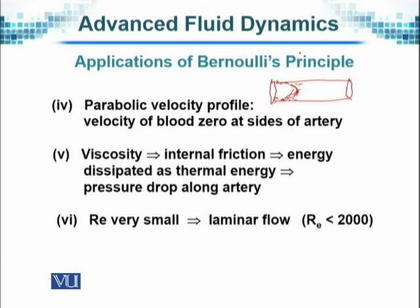When there is viscosity, then there is internal friction. Viscosity actually happens because of internal friction, and that implies energy. When energy is dissipated, then heat is generated because of the friction. We can see that just by rubbing the hand and we will see heat is generated. Since that dissipation of energy is there, therefore that is why the pressure drop is there in the artery.